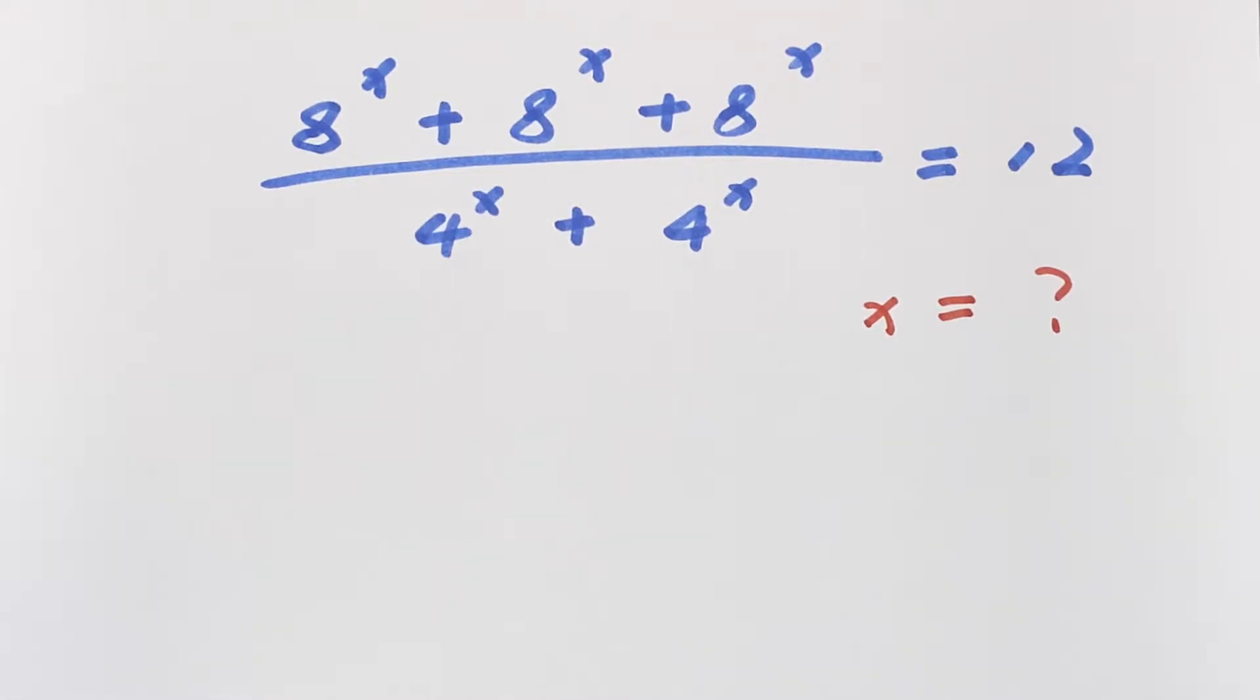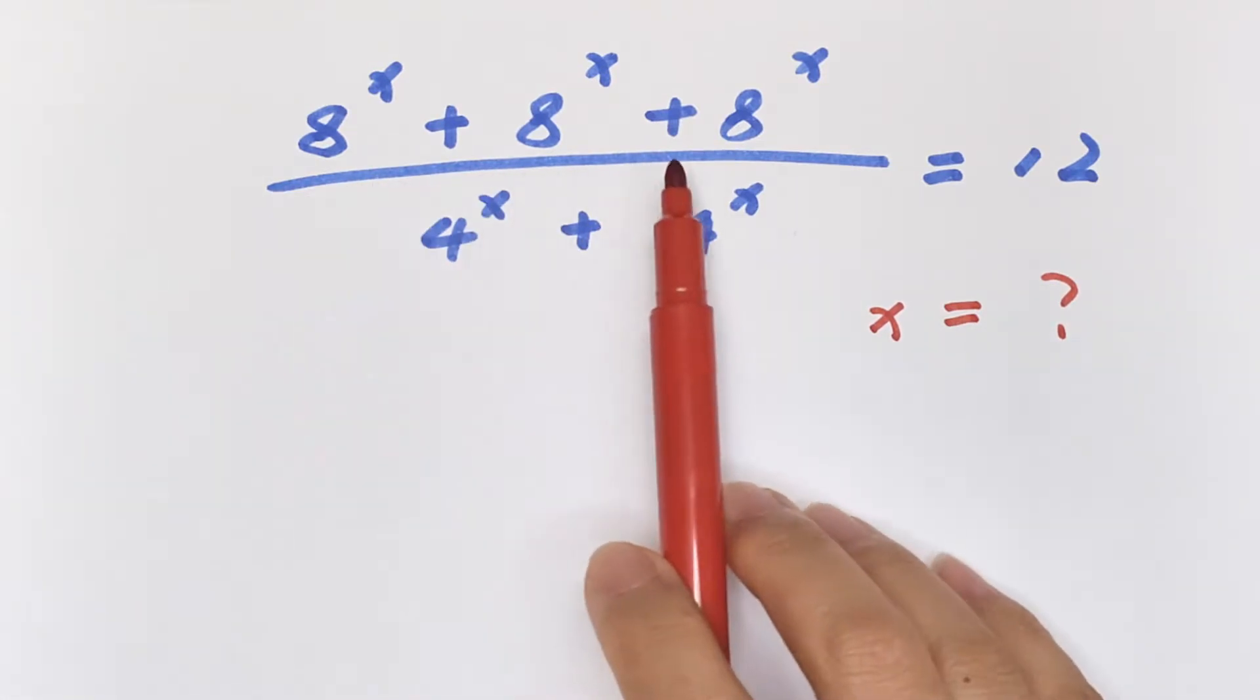Hello everyone, how to solve 8^x + 8^x + 8^x over 4^x + 4^x equals 12? To find the value of x, first step: from the numerator there are three 8^x added.